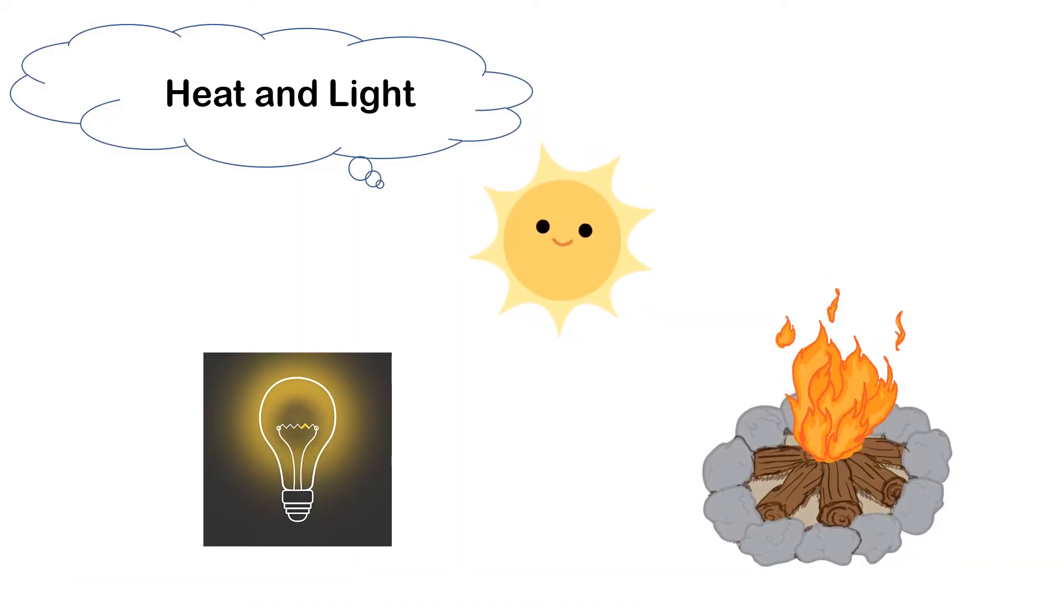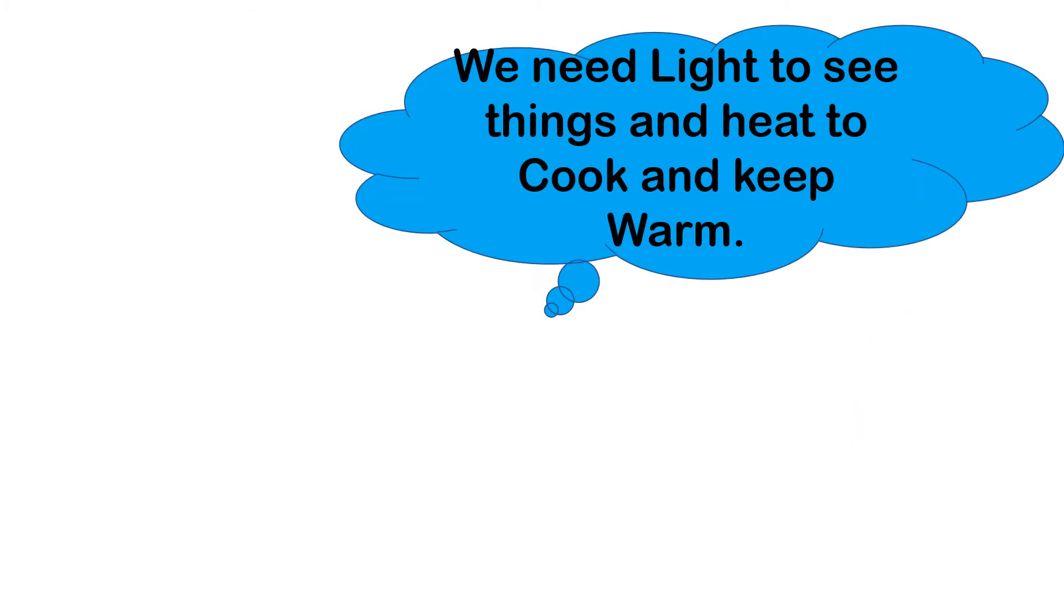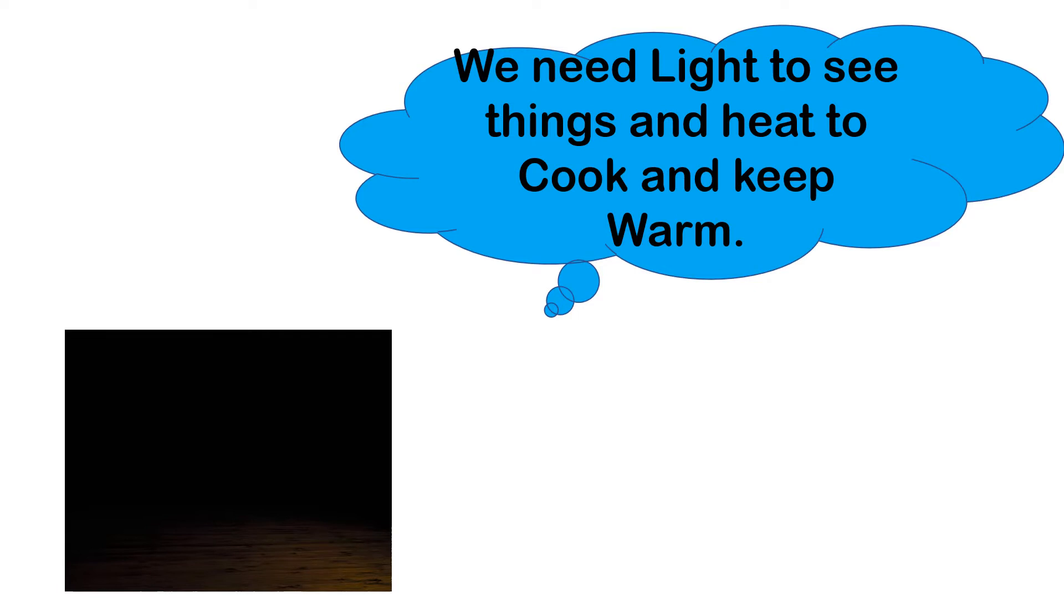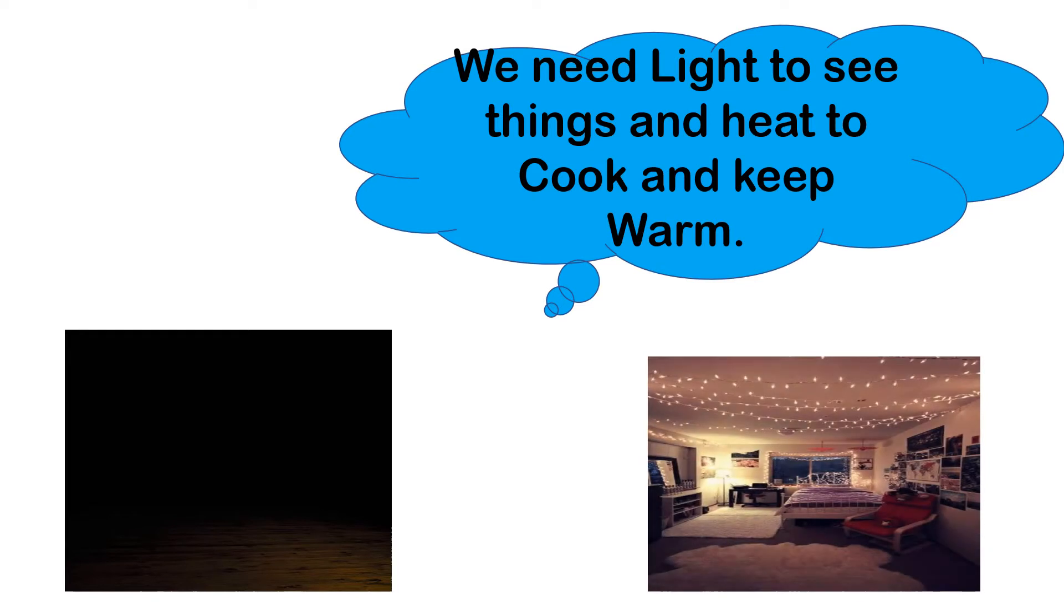So now children, we will discuss about heat and light. We need light to see things and heat to cook and keep warm. Look at the picture. If there's no light, can you see something? No. What if there's a light? You can see anything, even the small piece of dirt you can see it.